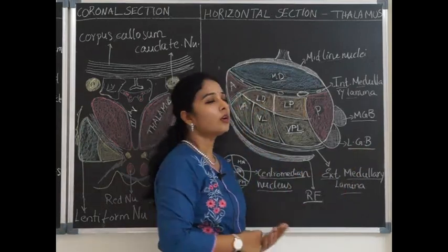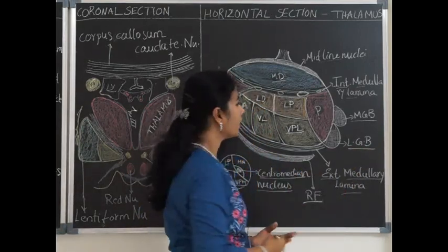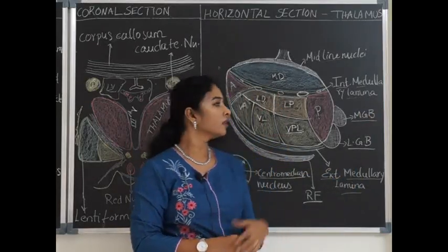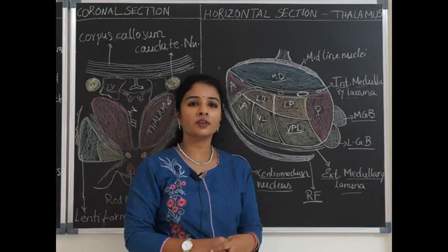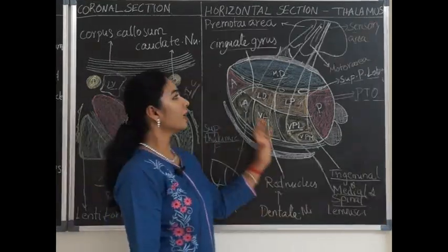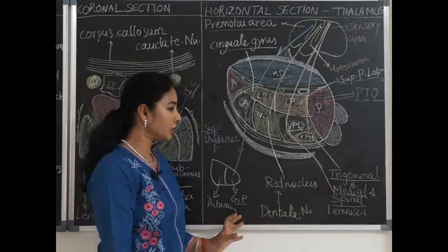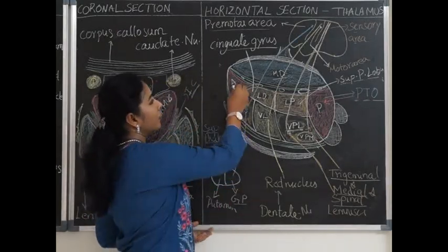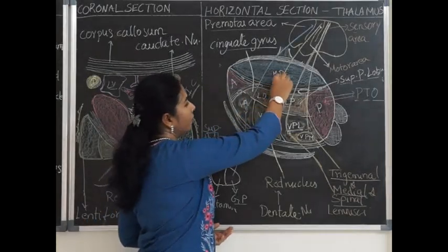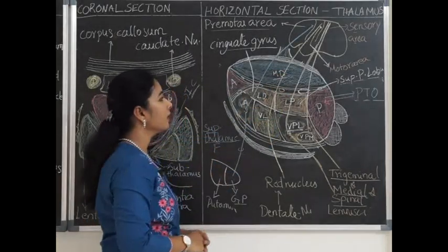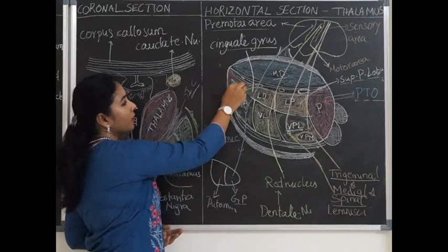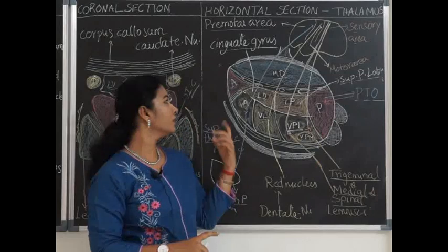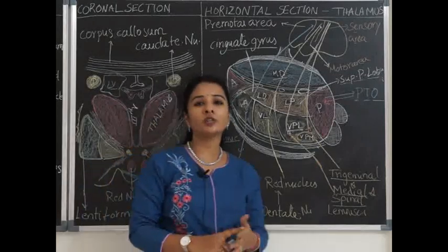The lateral geniculate body forms part of the optic pathway and the medial geniculate body forms part of the auditory pathway. Now let's see the connections of the thalamus. The anterior nucleus of the thalamus has connections with the mammillary bodies via the mammillothalamic tract.